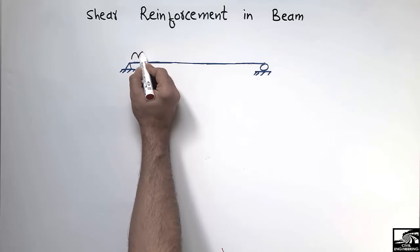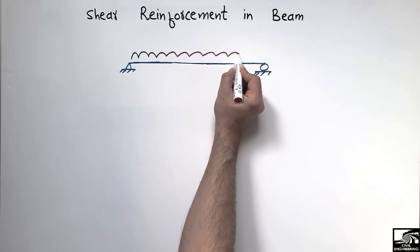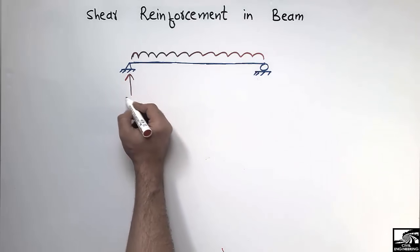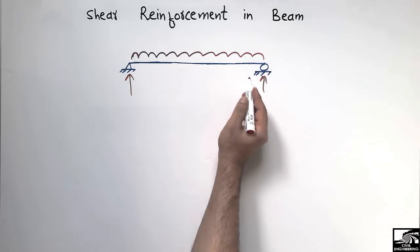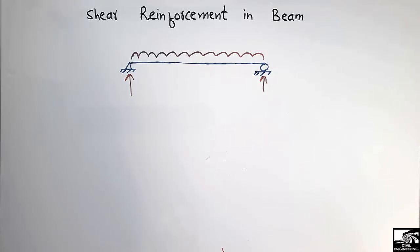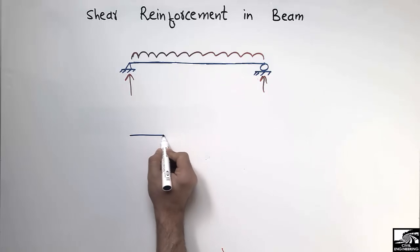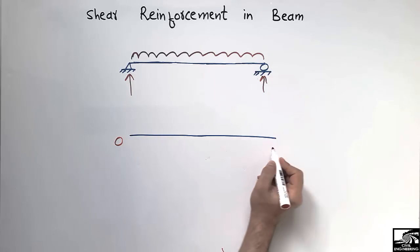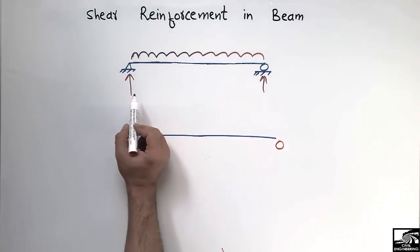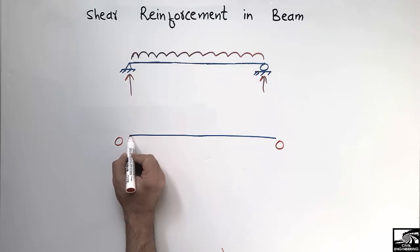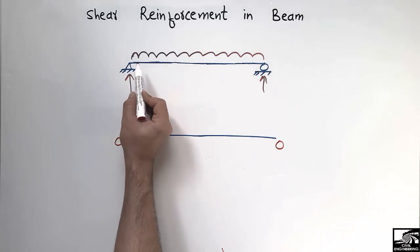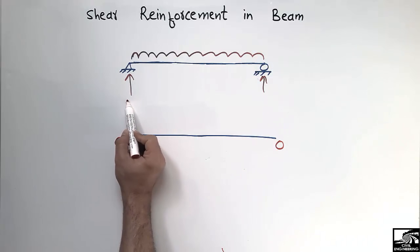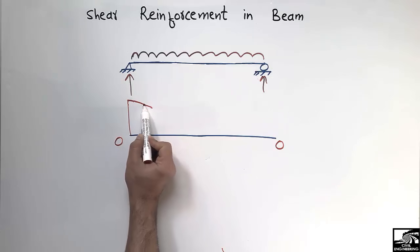Consider a simply supported beam with a uniformly distributed load acting on it. There are two support reactions, one at each end, and the whole load will be taken by these two supports. To draw the shear force diagram, I draw the reference line. Since the support reaction acts upward, the shear force starts in the upper direction, then the uniformly distributed load acts downward, which tries to make the shear force go in the downward direction.